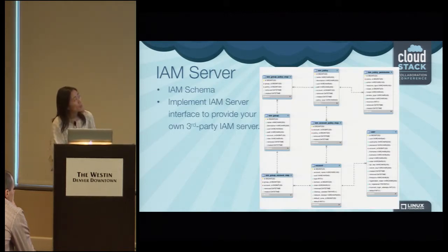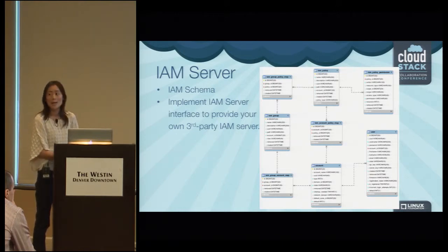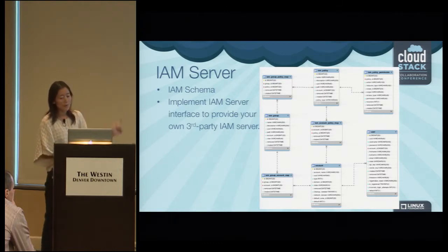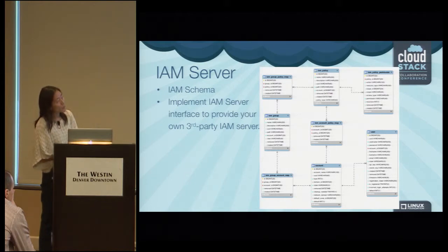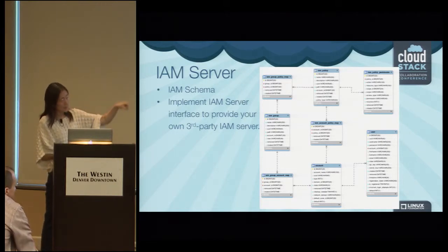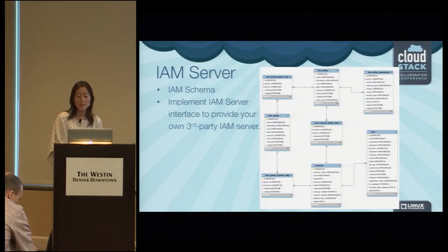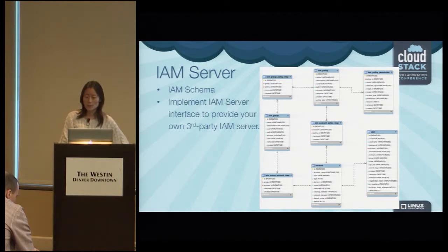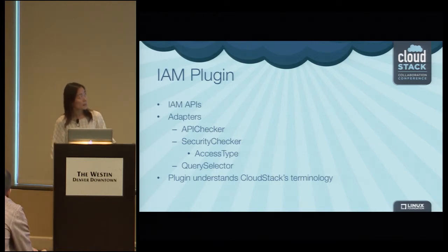This is the database schema — the basic representation for the IAM model. In our out-of-the-box implementation for the IAM server, we have account and user from CloudStack itself. An account can belong to several groups, and a policy can be defined with a one-to-many relationship to permissions. You can attach a policy to a group or directly to an account. Any third party can define their own schema and implement the IAM server interface to plug into CloudStack, or even use XML or JSON blob instead of this table-based approach. Now I'll hand over to Prachi to talk about the plugin details and use cases.